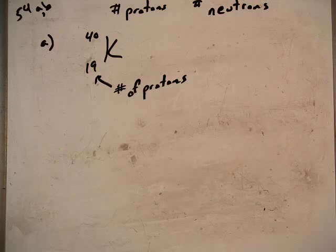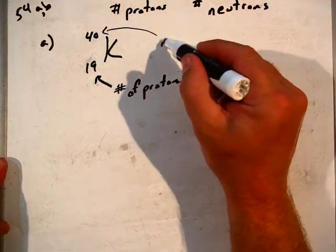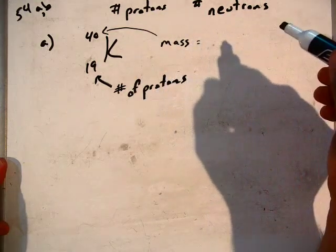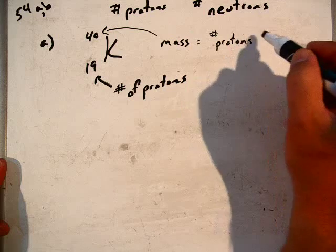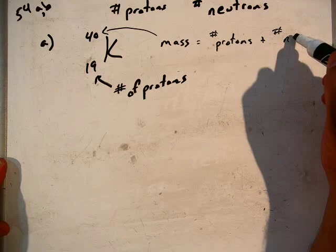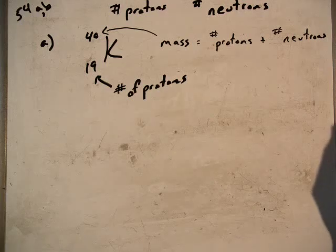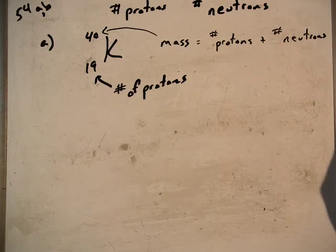That's what identifies it as potassium, that number of protons. The top number as it's written is the mass of the element, in this case potassium. When we're talking about the mass of an element, that is always going to be equal to the mass of the protons plus the mass of the neutrons. In terms of the periodic table, these guys are one atomic mass unit, so really we just have to count up the number of protons and the number of neutrons.